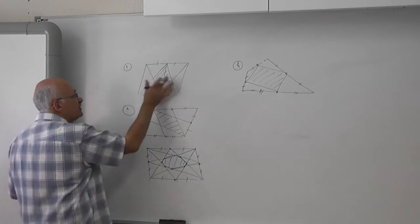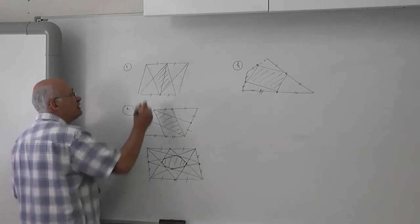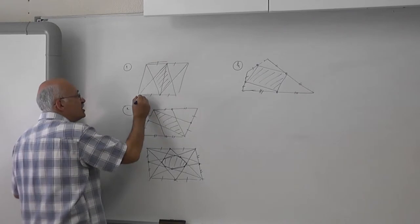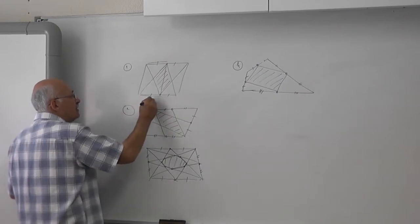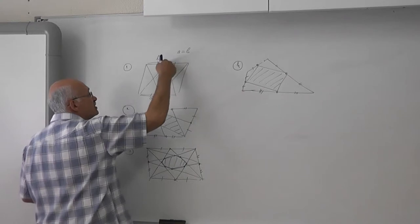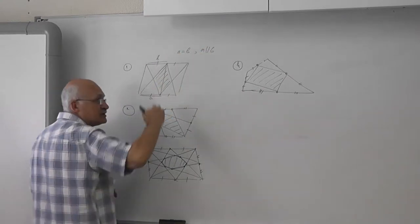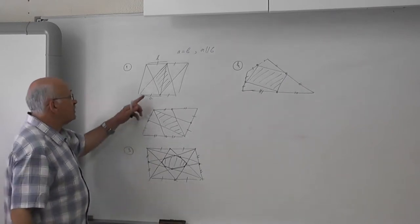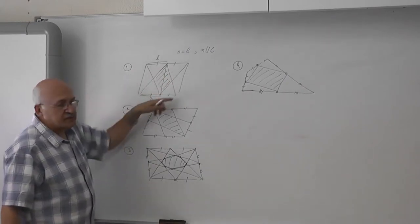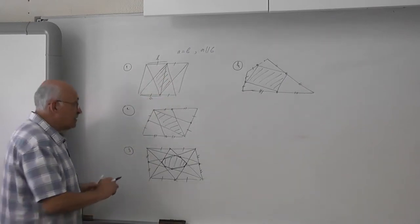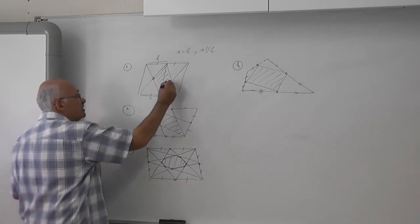Each of these two parts is a parallelogram because it has two sides here. A is equal to B because these are mid-points and A is parallel to B because the big one is a parallelogram. Therefore, this is a parallelogram and this is a parallelogram. In the parallelogram, diagonals bisect each other.